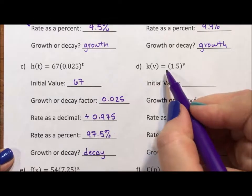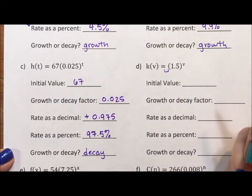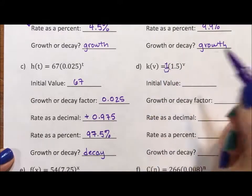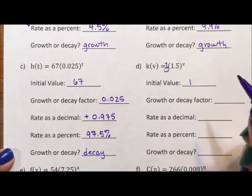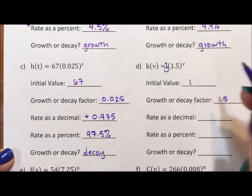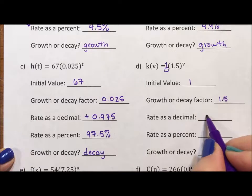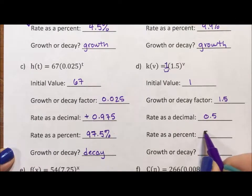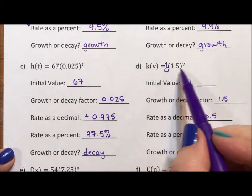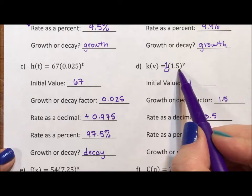This one is a little tricky because what number is outside of the parentheses, remember that it's always when nothing is written, there's an implied 1. So my initial value is 1. My growth or decay factor is 1.5 because that's what the exponent is attached to. Subtract 1, multiply by 100, and this is growth because A, we subtracted and got a positive or because the number in the parentheses is greater than 1. I prefer the second method for determining it than the first.